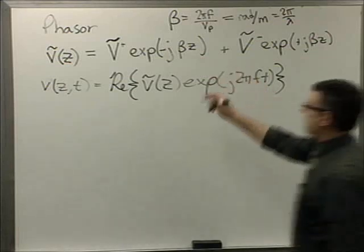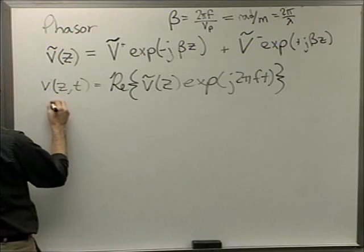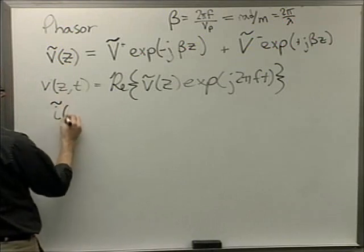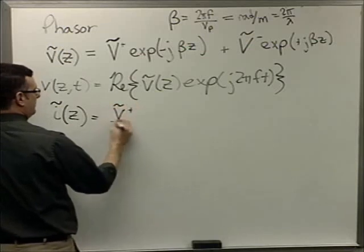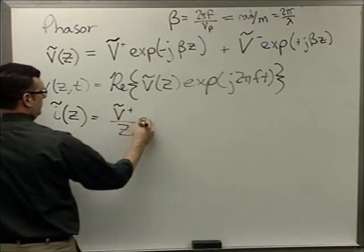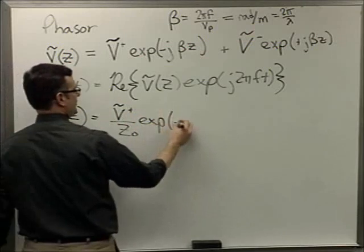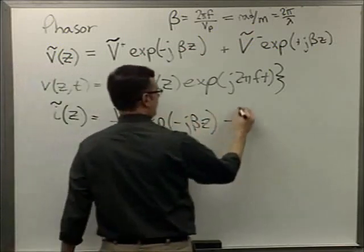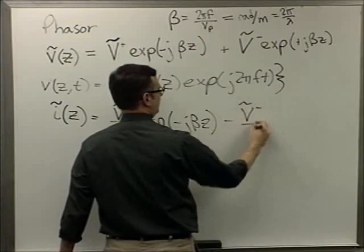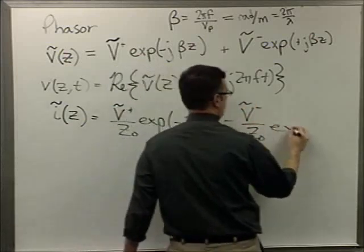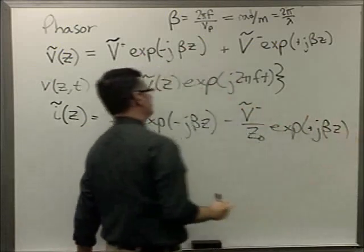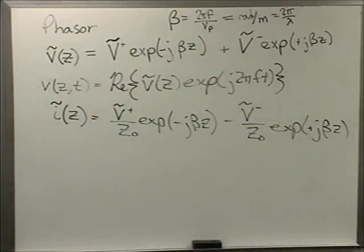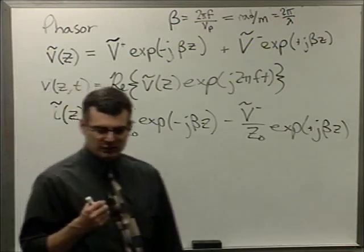Now, that's my voltage. Let me just write the current solution for completeness. I phasor as a function of space, conveniently getting rid of time, is also a forward propagating wave minus a backwards propagating wave. Any questions so far? All make sense? That's not so bad.